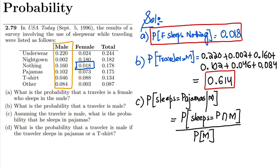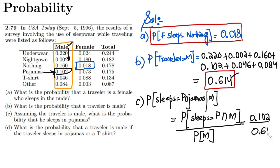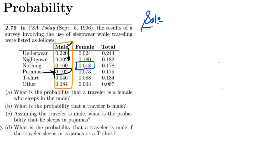Looking at the table, the intersection of the male column and the pajamas row gives 0.102. The probability that the traveler is male was already calculated as 0.614. So dividing 0.102 by 0.614 gives 0.166, and that is the answer to part c.